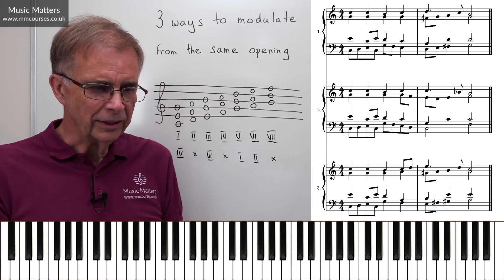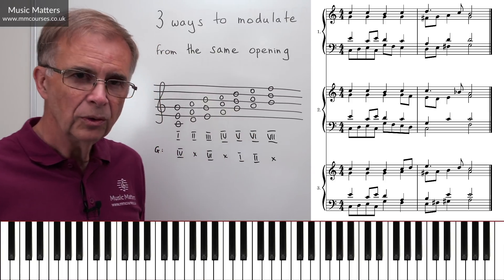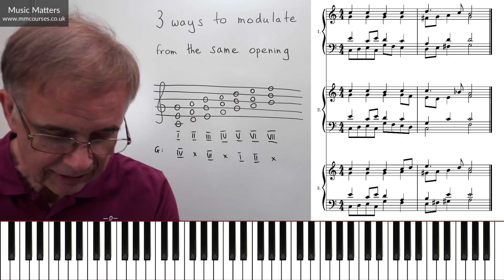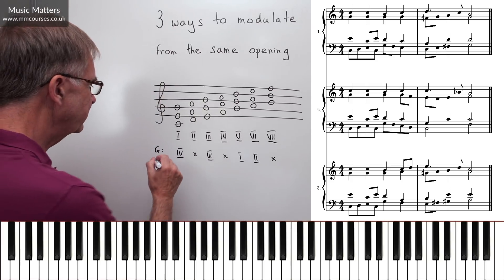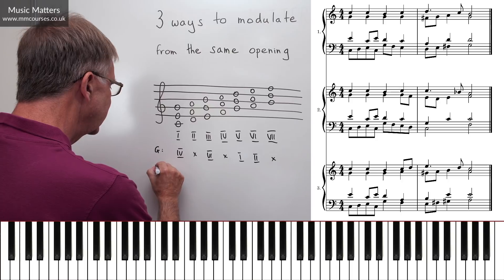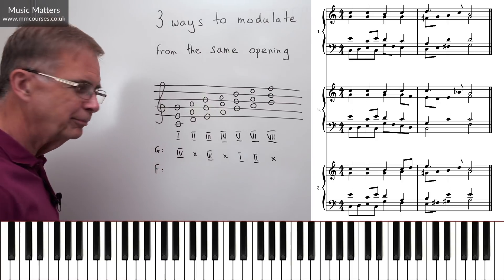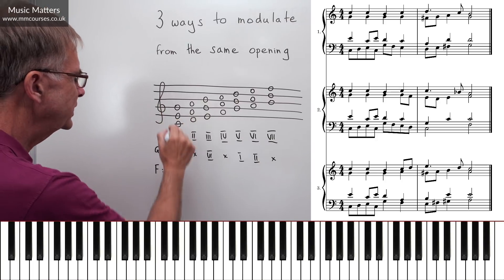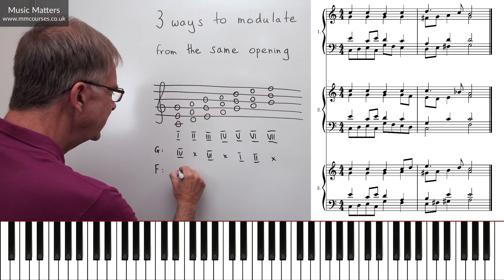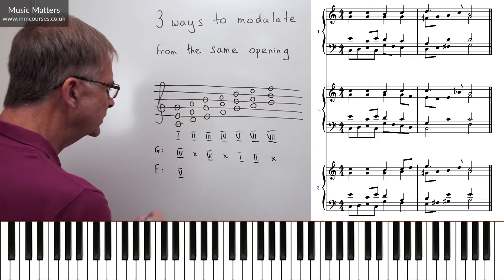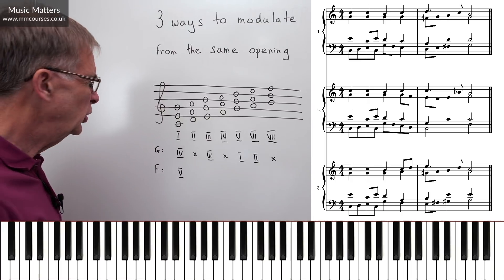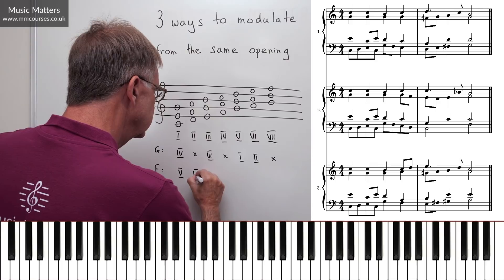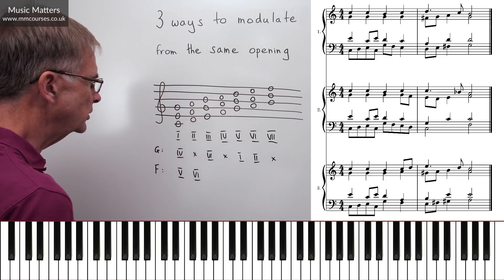In example two we're modulating to the subdominant key, F major. Chord I in C is chord V in F — quite useful. Chord II in C is chord VI in F — that's good.